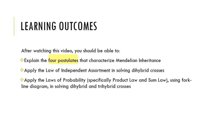In this video lesson on Mendelian inheritance, we will be delving deeper into the four postulates which Mendel formulated, which characterize Mendelian inheritance. We will also elaborate on the significance of understanding the law of independent assortment as we try to predict phenotypic ratios in a dihybrid cross. Lastly, we will apply the laws of probability using a much simpler method known as the fork-line diagram to solve dihybrid and trihybrid crosses.